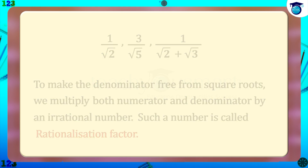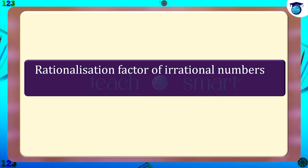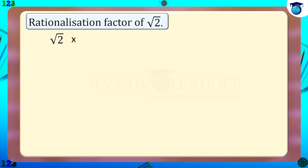Now let us study the rationalization factor of irrational numbers having square roots. For example, let us see what is the rationalization factor of √2. The rationalization factor of an irrational number is a suitable factor that, when multiplied with the given irrational number, results in a rational number. If we multiply √2 by √2, we get 2, which is a rational number.